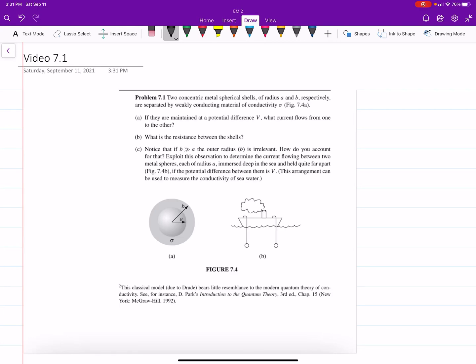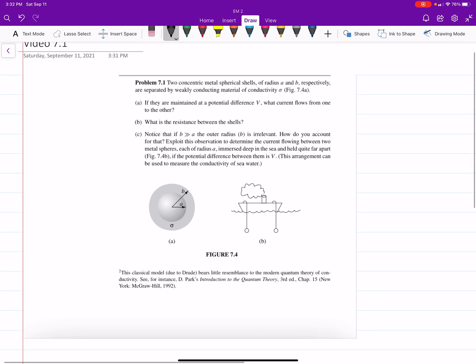Okay, so this is problem 7.1 out of Griffiths. I'm going to try to go through a lot of chapter 7 problems right now because I have an exam in about two weeks in my E&M II class. So I'm going to try to go through and start doing these and hopefully this will help me get better and at the same time help anyone ask questions. So it says two concentric metal spherical shells of radius A and B respectively are separated by a weakly conducting material of conductivity sigma. So part A asks, if they are maintained at a potential difference V, what current flows from one to the other?